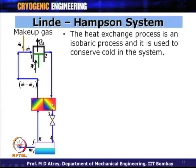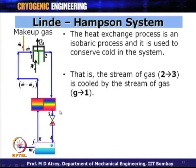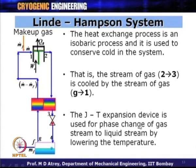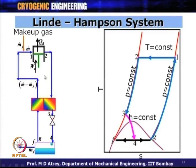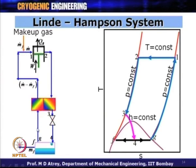The compression process is assumed isothermal while JT expansion is isenthalpic. The system incorporates a two-fluid heat exchanger assumed to be 100 percent effective. The heat exchange process is isobaric and is used to conserve cold in the system — there is no pressure drop across the heat exchanger. Process 1 to 2 is isothermal compression; 2 to 3 is an isobaric heat exchanger process where temperature gets lowered because of the return gas stream from G to 1.